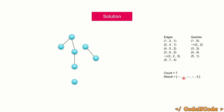Next query is qi = 3. We add edge 3-2: component of size 4 merges with component of size 2, so 4×2 = 8, add 8 to count. Next edge has weight > 3, so we stop. Count is now 15, stored at position 3 in the result array.